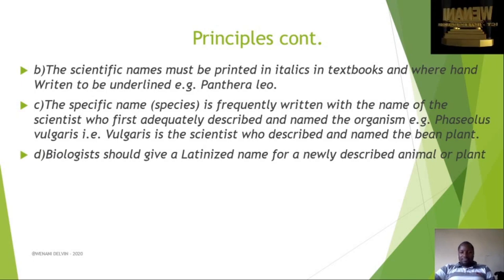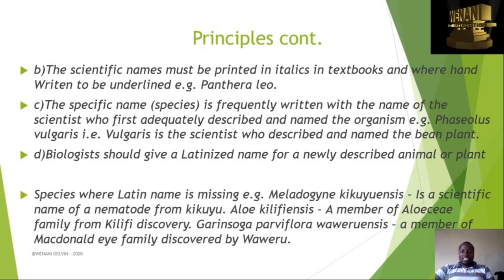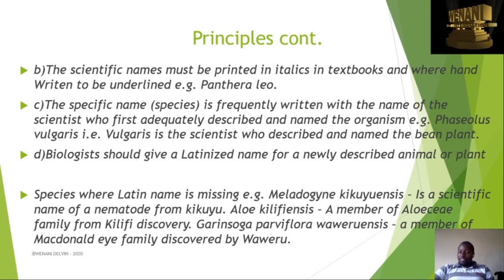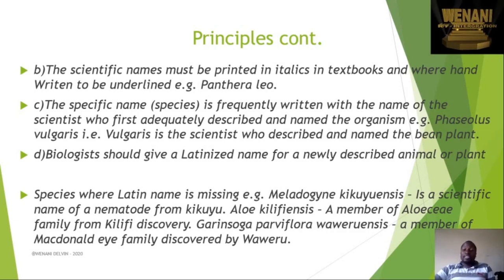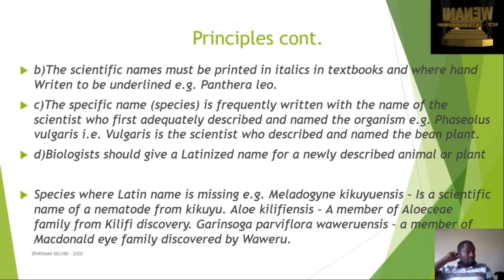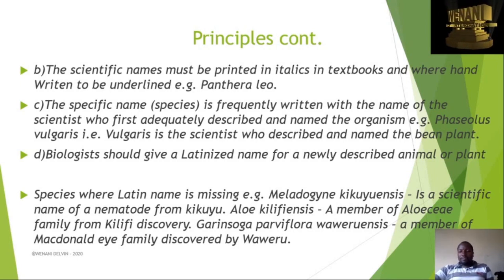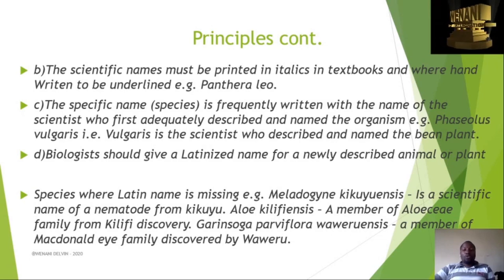The biologist should also give a Latinized name for a newly described animal or plant. For example, Meloidogyne kikuyuensis is the scientific name of a nematoid from the Kikuyu region. Another example is a species named after Kilifi — Aloe kilifiensis. Then we have Garisoni pachylova warwerensis, a member of a family discovered by somebody named Warweru.